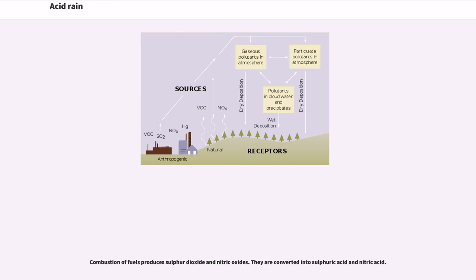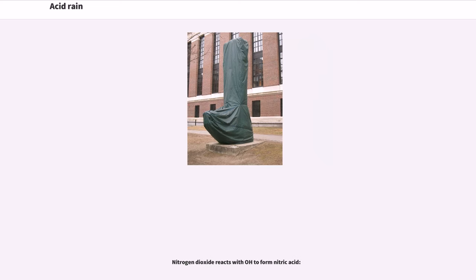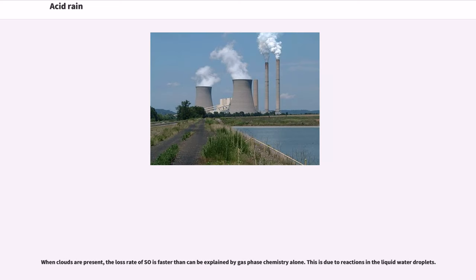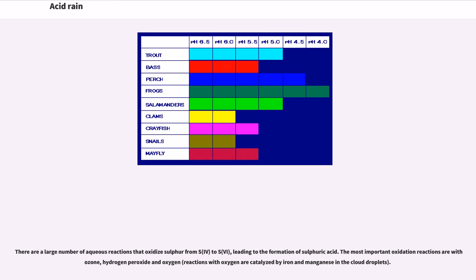Combustion of fuels produces sulfur dioxide and nitric oxides, which are converted into sulfuric acid and nitric acid. In the gas phase, sulfur dioxide is oxidized by reaction with the hydroxyl radical via an intermolecular reaction, and sulfur trioxide (SO3) is then converted rapidly to sulfuric acid. Nitrogen dioxide reacts with OH to form nitric acid. When clouds are present, the loss rate of SO2 is faster than can be explained by gas phase chemistry alone, due to reactions in the liquid water droplets. Sulfur dioxide dissolves in water and, like carbon dioxide, hydrolyzes in a series of equilibrium reactions. The most important oxidation reactions are with ozone, hydrogen peroxide and oxygen, with reactions with oxygen catalyzed by iron and manganese in the cloud droplets.